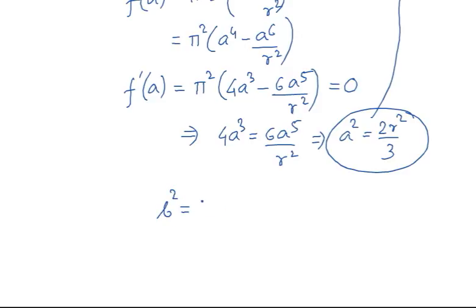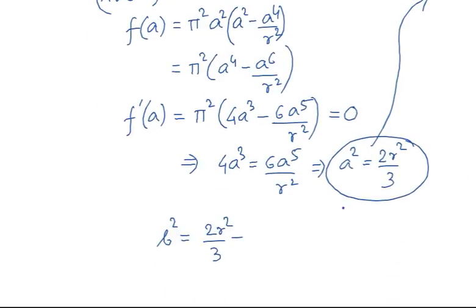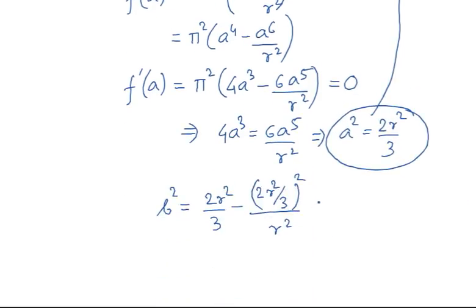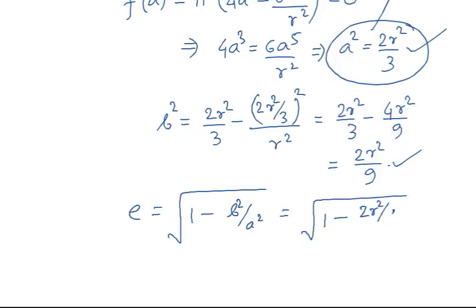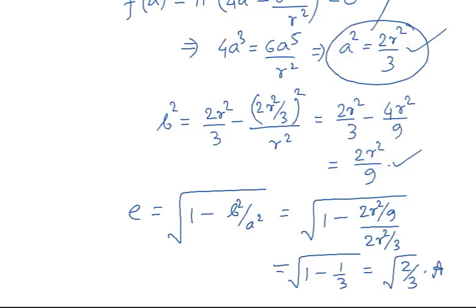Substituting A² = 2R²/3 into B² = A² − A⁴/R² gives B² = 2R²/3 − (2R²/3)²/R² = 2R²/3 − 4R²/9 = 2R²/9. So for maximum area, A² = 2R²/3 and B² = 2R²/9. The eccentricity is e = √(1 − B²/A²) = √(1 − 1/3) = √(2/3). This is the answer.